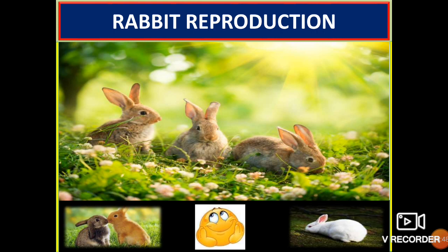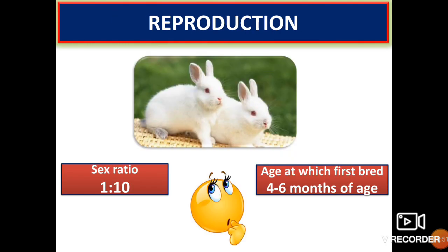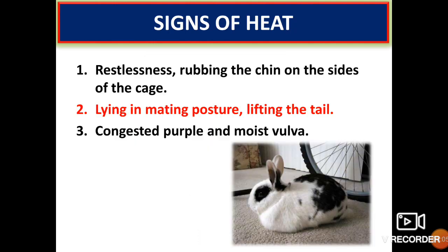Now, the breeding management in rabbits. The sex ratio is 1 to 10, that is 1 male for 10 females. Breeding can start at 4 to 6 months of age — 4 months for small breeds and 5 to 6 months for medium-sized breeds. Signs of heat include: the female rabbit will be restless, rub her chin on the sides of the cage, lie in the mating posture lifting the tail, and will have a congested purple and moist vulva.